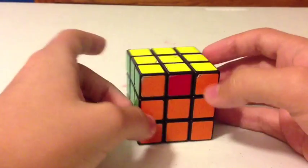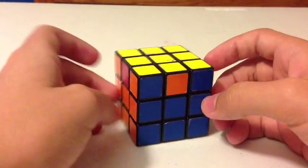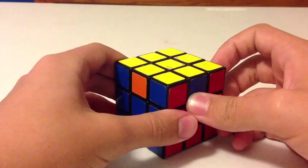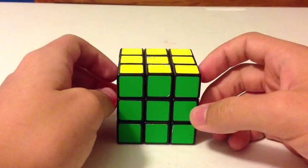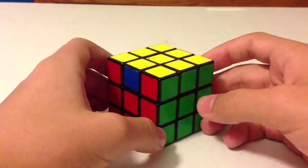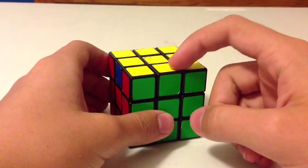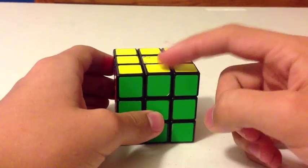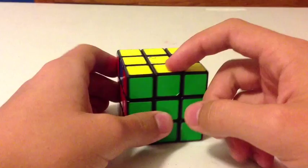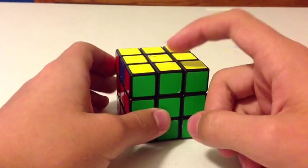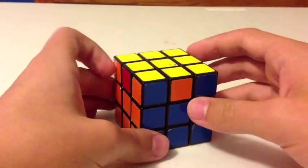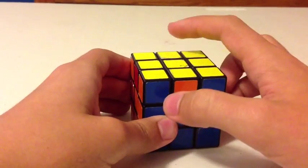But this isn't the case. So what you want to do is look around the cube and see if you can find a solved edge. If you can, that's good. After that, hold the cube so that the solved edge is on the opposite side of you, like this.